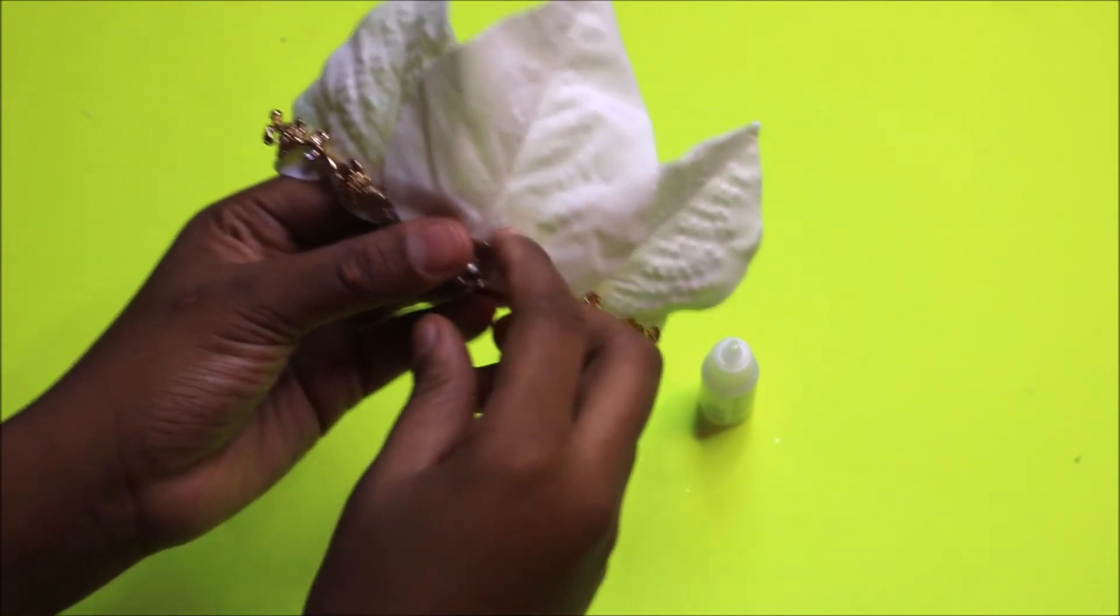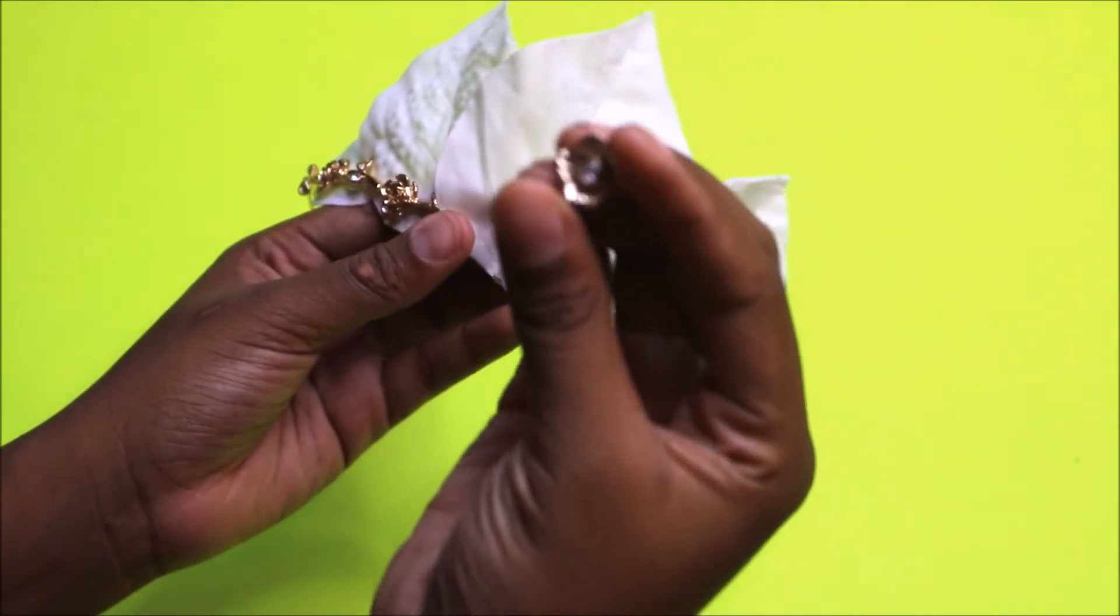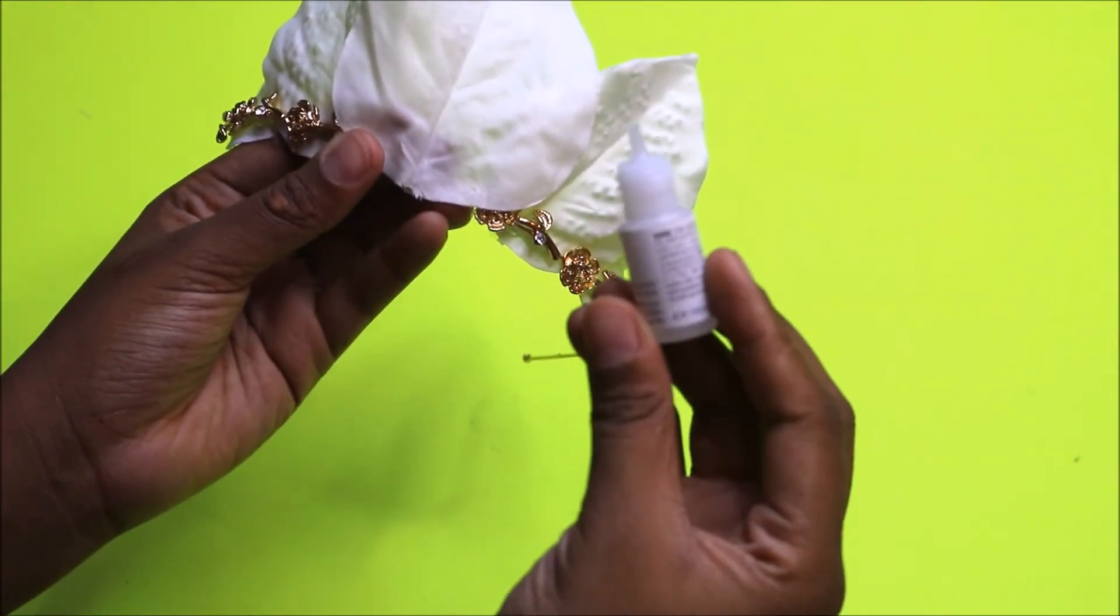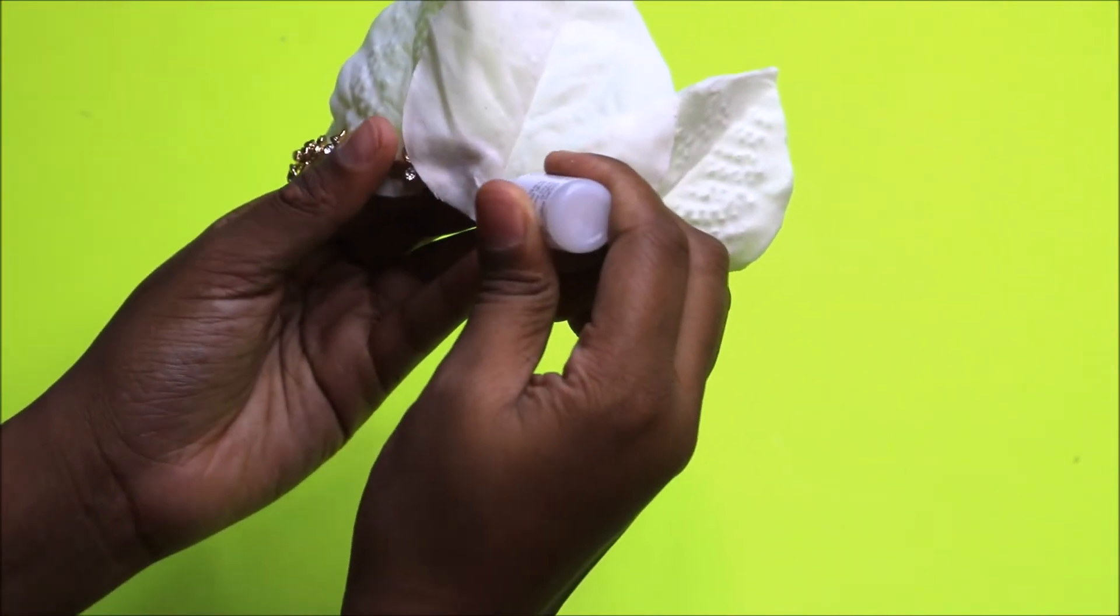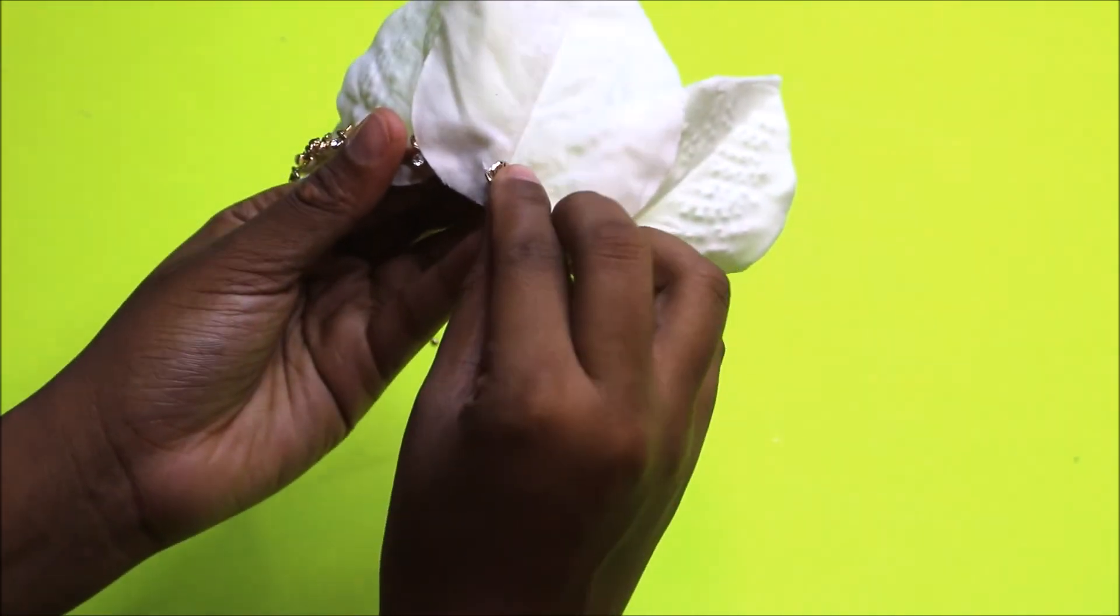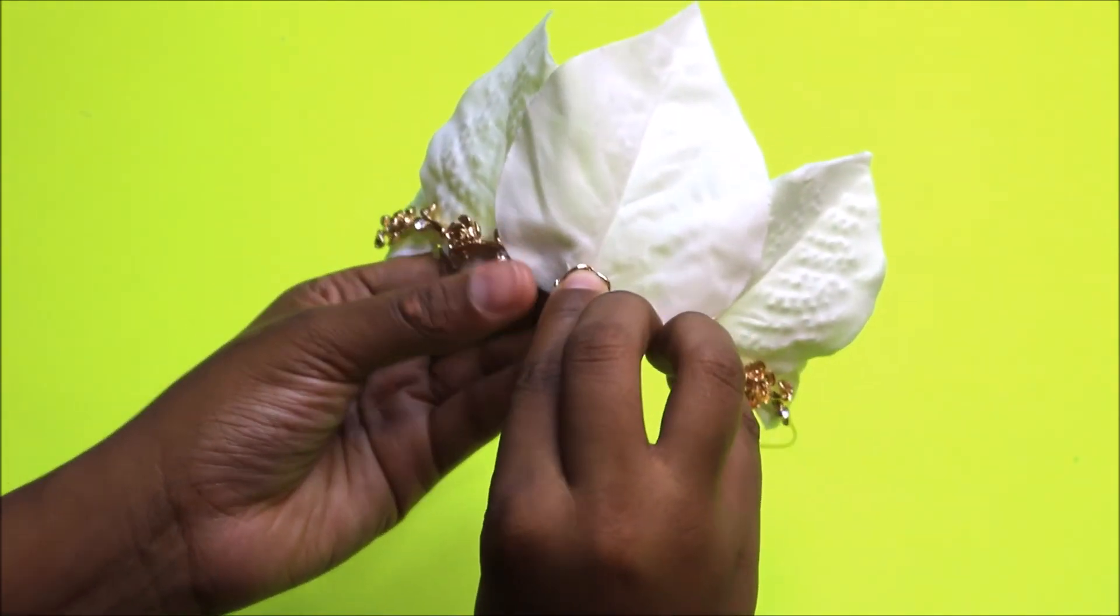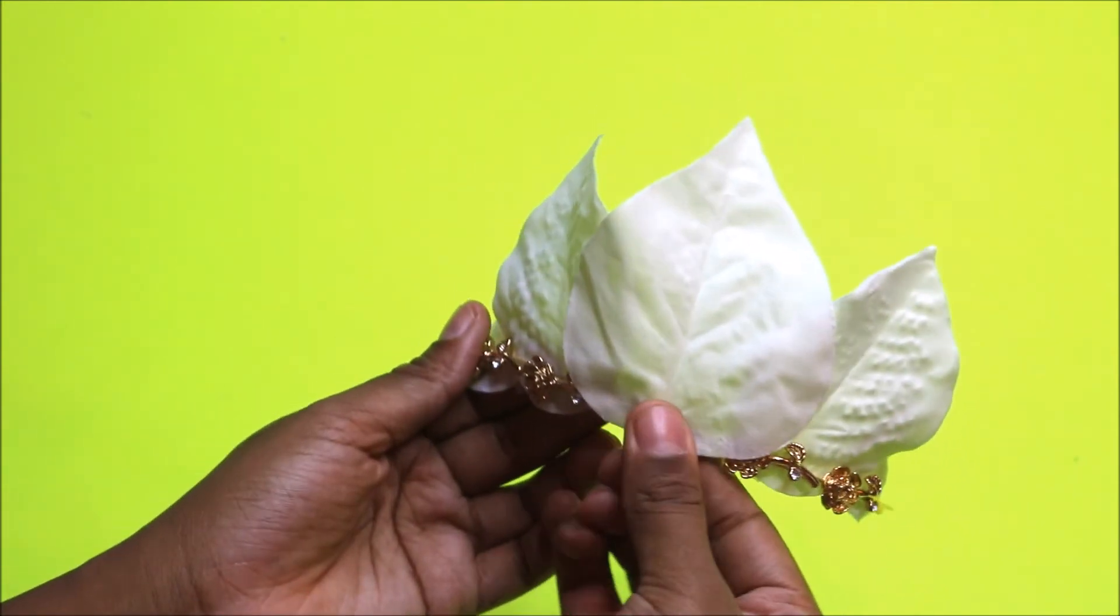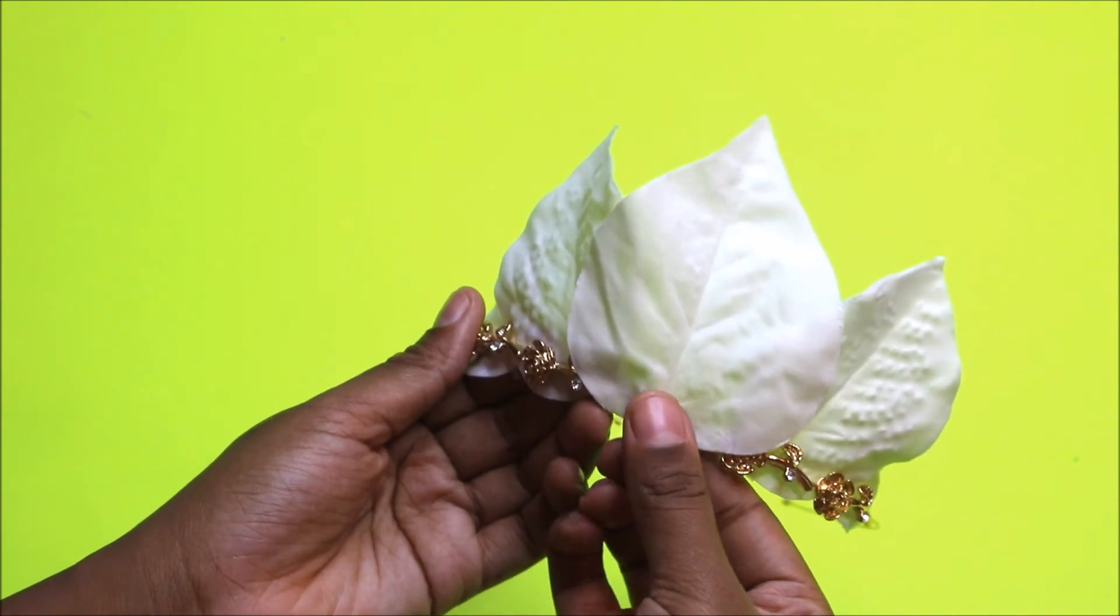So for this last step, I just took one of the gold flowers from my other crown that I got and I wanted to place it right in the center just to give it a more embellished look. And I'm using this nail glue because I couldn't find my crazy glue so I had to improvise. It works just the same so don't worry.